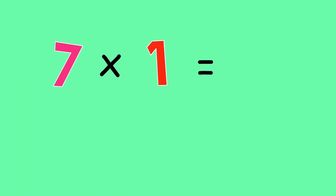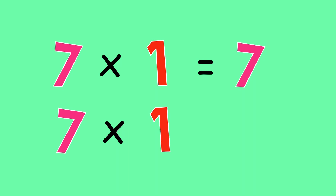What does 7 times 1 equal? You're correct! 7. 7 times 1 equals 7.